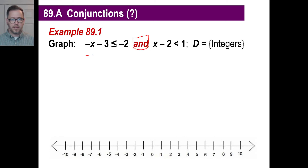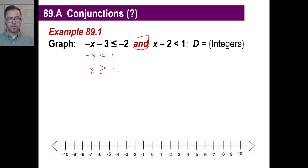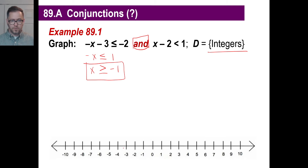Here we can go ahead and write negative x, move this over. That's going to be less than or equal to positive 1. And if we flip this, we have x is greater than or equal to negative 1. So I'm going to use that right now and put it on the graph. We are allowed to use integers — the domain is greater than or equal to negative 1.